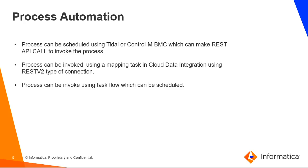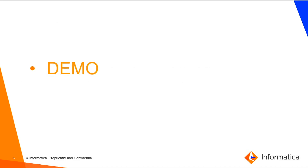Once you build the API, there are multiple ways to invoke it — manually through Postman or another test tool. However, for automation we need to orchestrate it through a scheduler, such as Tidal or Control-M, which can make an API call to invoke the process. Alternatively, you can build a Cloud Data Integration mapping using REST V2 type connections, or invoke the process through a task flow that can itself be scheduled. Let's move into a demo.